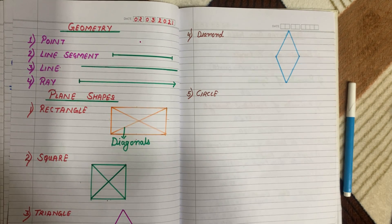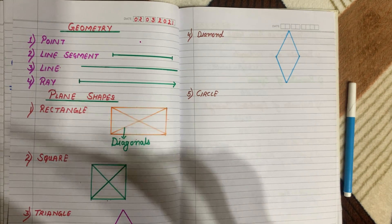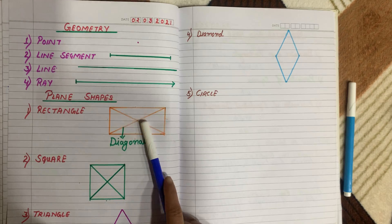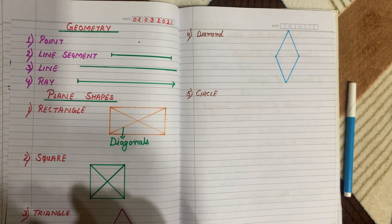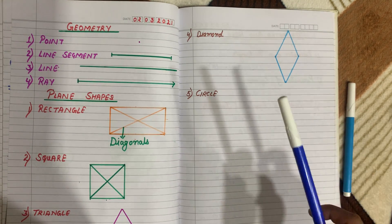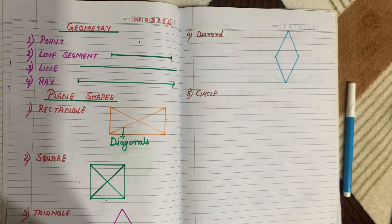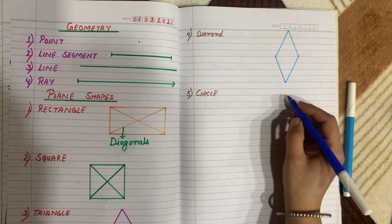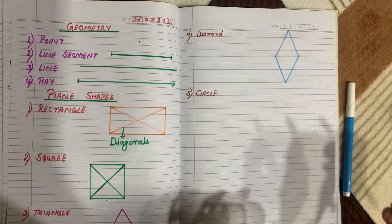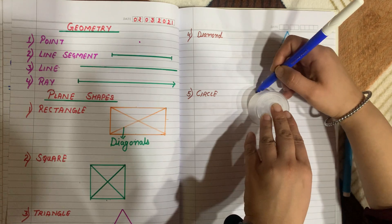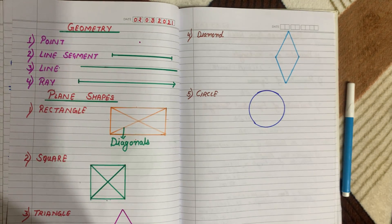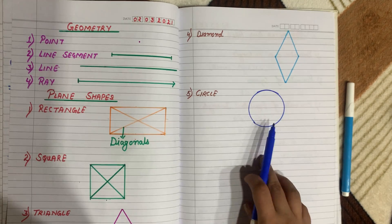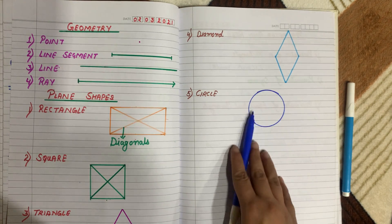A circle has no sides and no vertices. A rectangle has four sides and four vertices, a square also has four sides and four vertices, a triangle has three sides and three vertices, but a circle does not have any sides or any vertices. It is round in shape.